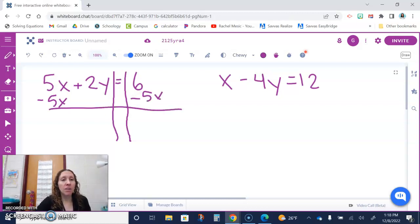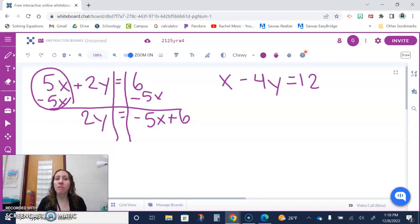On the left, 5x minus 5x is 0 which is nothing so I don't need it anymore, but I still have 2y. On the right I cannot combine 6 and negative 5x because they are not like terms. So I'm going to write them side by side, but I'm going to put the x term first because y equals mx plus b, so I want the x term first.